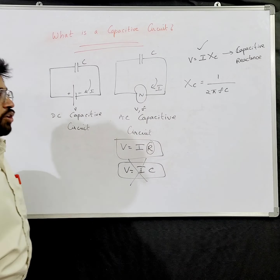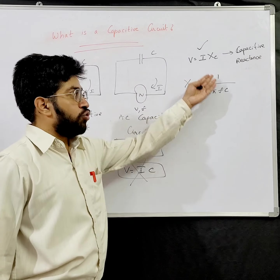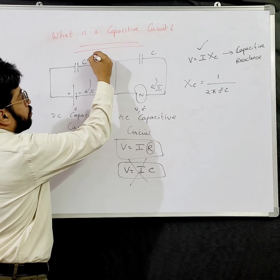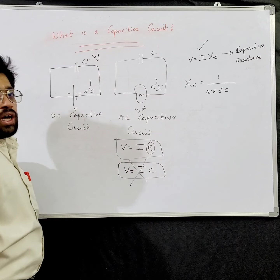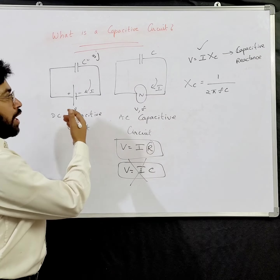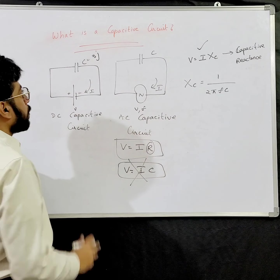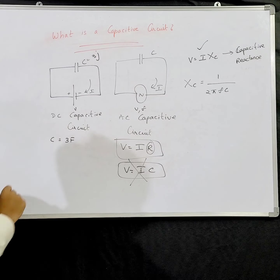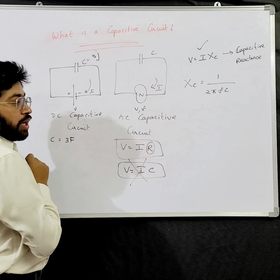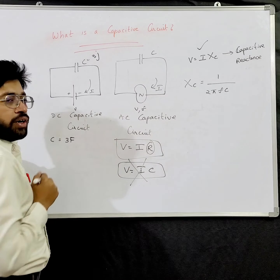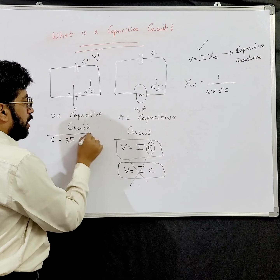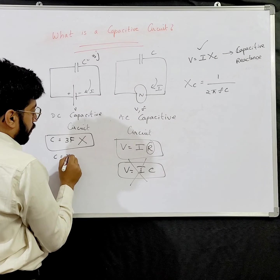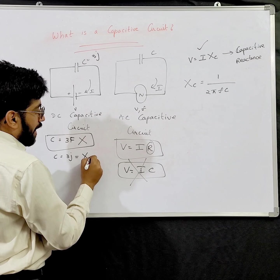Now when you come to DC capacitive circuits, you cannot apply that formula, because in a DC circuit you don't have a frequency value. So if you have a capacitor value like 3 F, you cannot use the AC formula. Instead, you need the capacitance expressed as an imaginary value — for example, 3j — which is treated as the conjugate value and is equivalent to Xc.